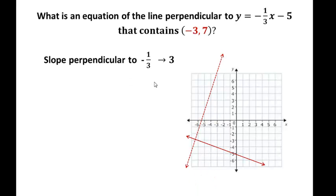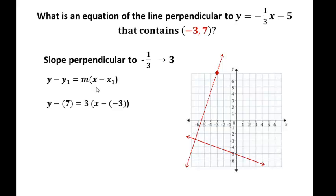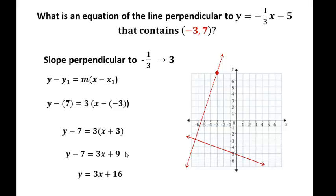The point negative three, seven will appear on the graph, and the new perpendicular line passes through it. Using point-slope form with slope three and the point negative three, seven: y minus seven equals three times the quantity x minus negative three. The double negative turns positive, so distribute: three times x is 3x, three times three is nine. Adding seven to both sides gives y equals 3x plus sixteen — now in slope-intercept form.